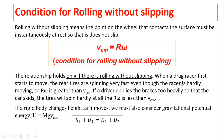In some cases rolling without slipping does not hold. For example, when a drag racer first starts to move, the rear tire is spinning very fast, so r times omega is much larger than v center of mass. Another example: when a driver applies the brakes too heavily and the tire skids, r times omega is less than v center of mass. If a rigid body also changes height during its translational motion, we also have to consider gravitational potential energy: U equals mgy center of mass. Total mechanical energy is conserved.